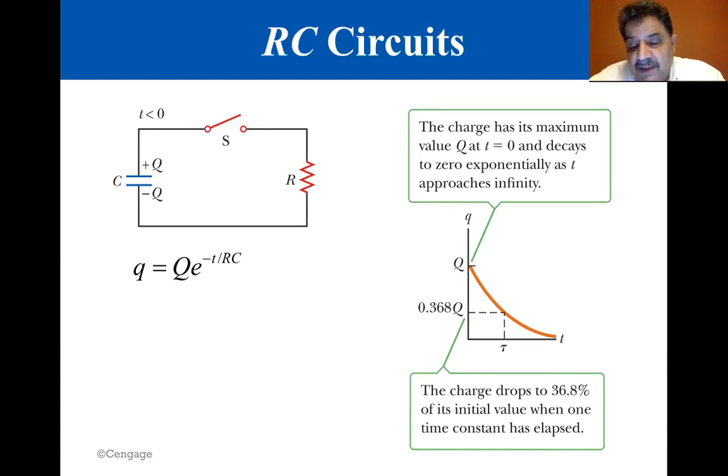In the interval t equals tau equals RC, the charge decreases from its initial value Q to 0.368 Q. In other words, in a time equal to one time constant, the capacitor loses 63.2 percent of its initial charge.